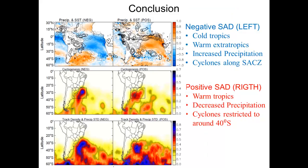Here are some composites. At the top, we see precipitation anomalies for both phases. In the middle, we have the formation of low pressure systems. And at the bottom, it's the path of these low pressure systems.